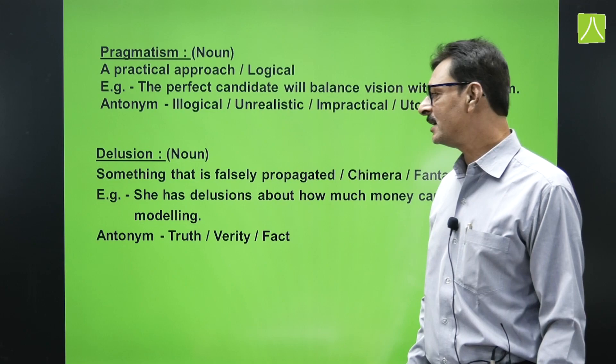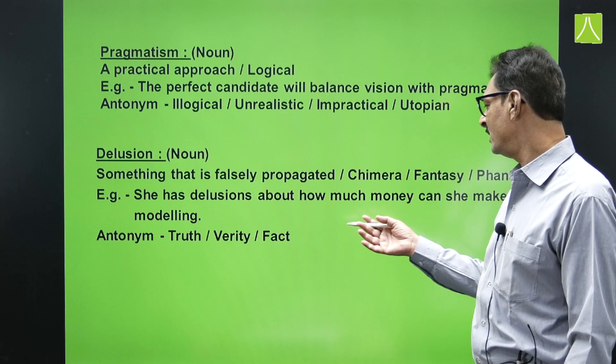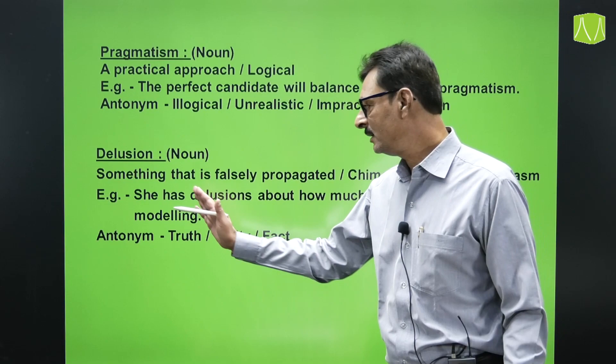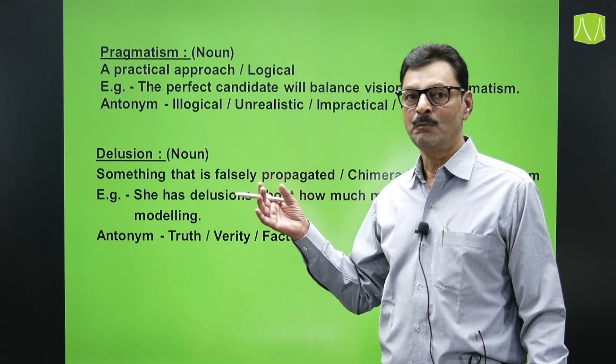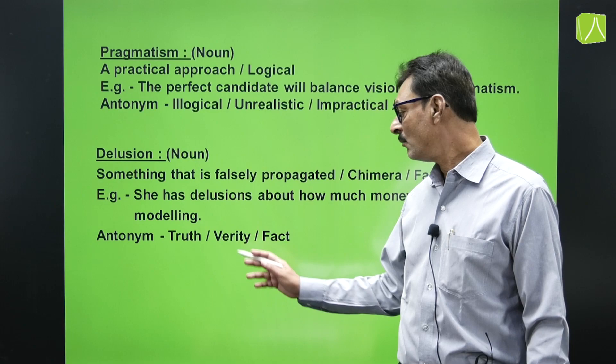'Delusion' is a noun — something that is falsely propagated, a fantasy or illusion. In Hindi, chalawa. Example: 'She has a delusion about how much money she can make in modelling' — she has unrealistic dreams. Antonyms are truth, verity, and fact.